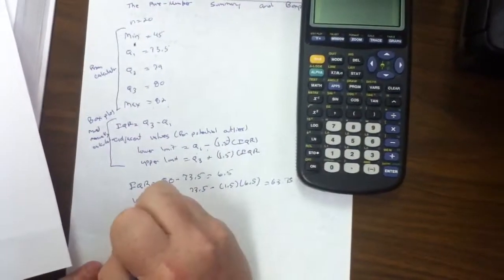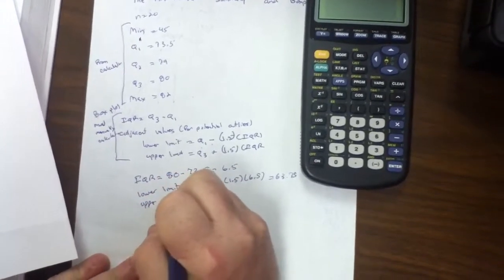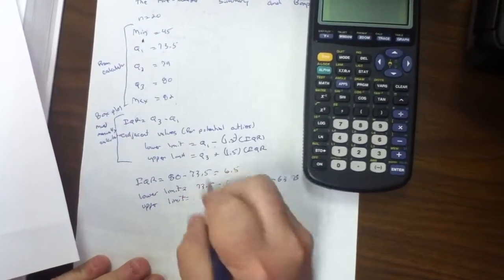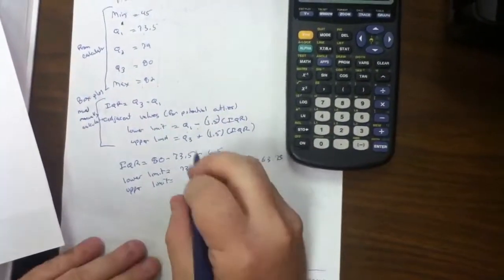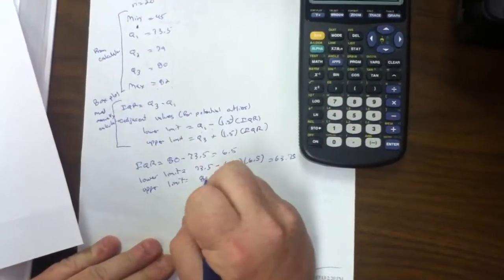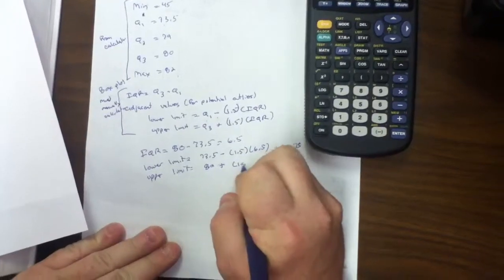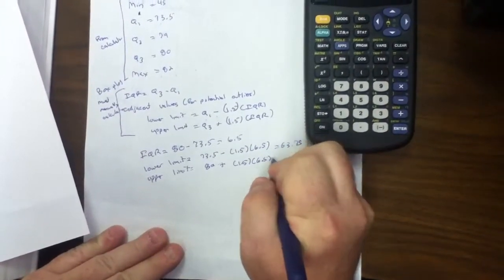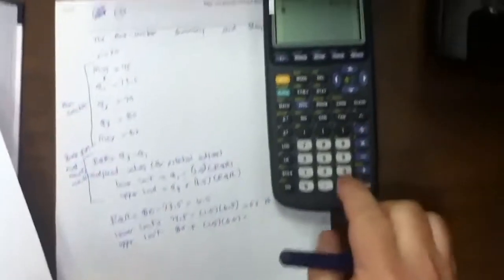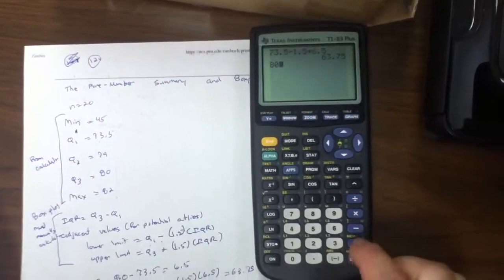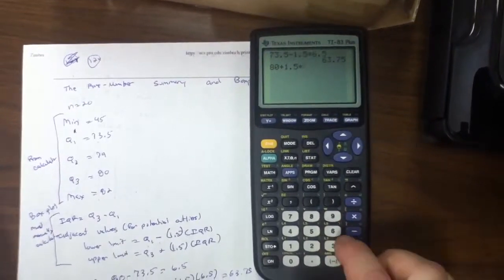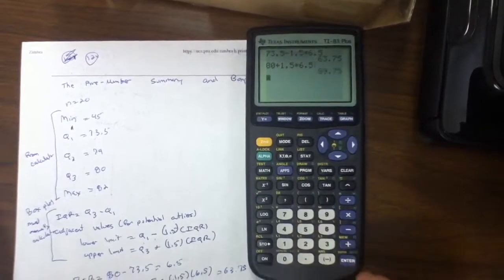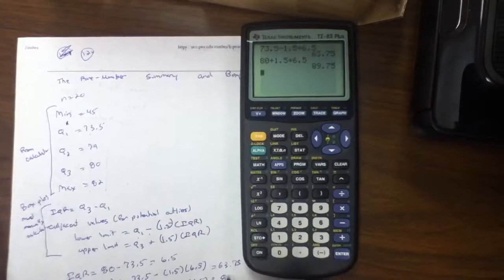The upper limit is calculated by taking Q3 and adding 1.5 times the IQR. Q3 is 80 plus 1.5 times 6.5. Calculate that. Use our calculator. 80 plus 1.5 times 6.5, which is 89.75.